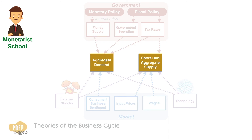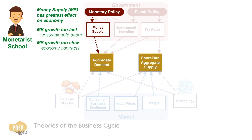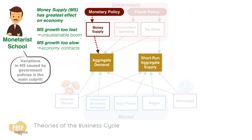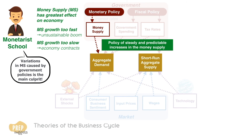Rather than fiscal policy, monetarists believe money supply has the greatest effect on the economy. When the money supply grows too fast, the boom is unsustainable. When it grows too slow, the economy contracts. As such, one of the main culprits of business cycles is the variations in money supply caused by monetary policy. Monetarists recommend that the government should follow a policy of steady and predictable increases in the money supply in order to keep aggregate demand stable and growing.